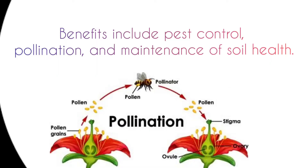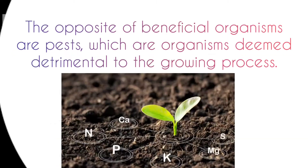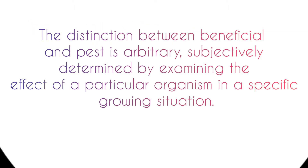Benefits include pest control, pollination, and maintenance of soil health. The opposite of beneficial organisms are pests, which are organisms deemed detrimental to the growing process. The distinction between beneficial and pest is arbitrary, subjectively determined by examining the effect of a particular organism in a specific growing situation.